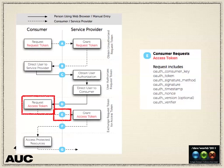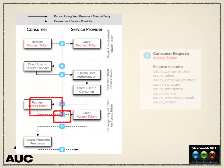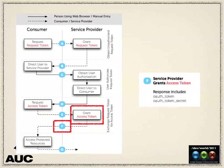The consumer then makes one last request with all the information it now has: the consumer key, the temporary token, the signature method, and the verifier — to show that the authentication on the service side went okay. What comes back is the completed auth token and the auth token secret. These are what you need to make calls to the protected APIs in the service, such as getting a user's Twitter timeline.